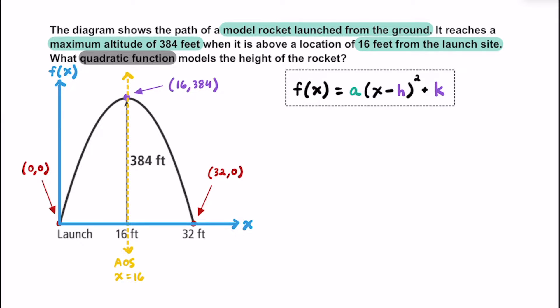While there is standard form and factored form for quadratics, we're going to use vertex form since we do have the vertex for this parabola. Notice how the vertex here is (16, 384) — 16 is going to represent h in this formula and 384 is going to represent k.